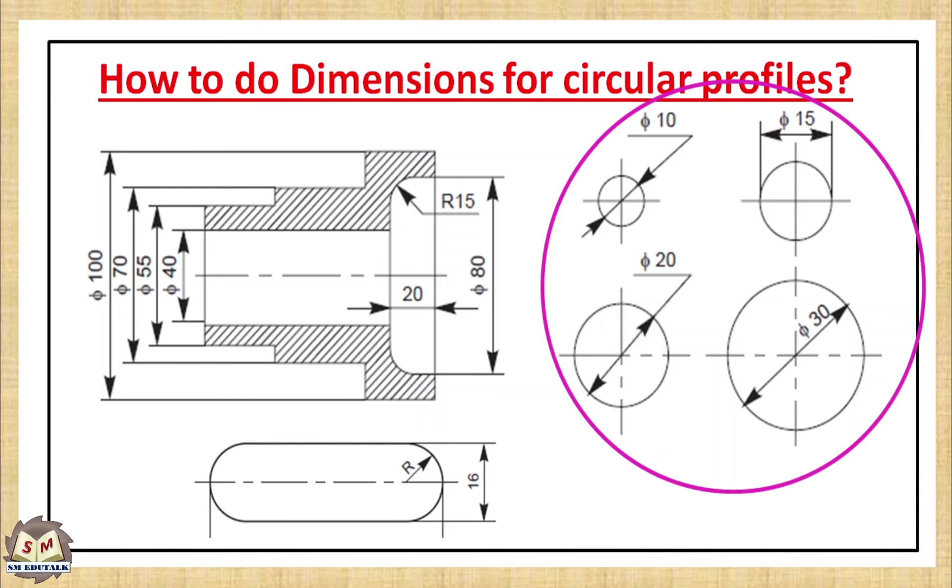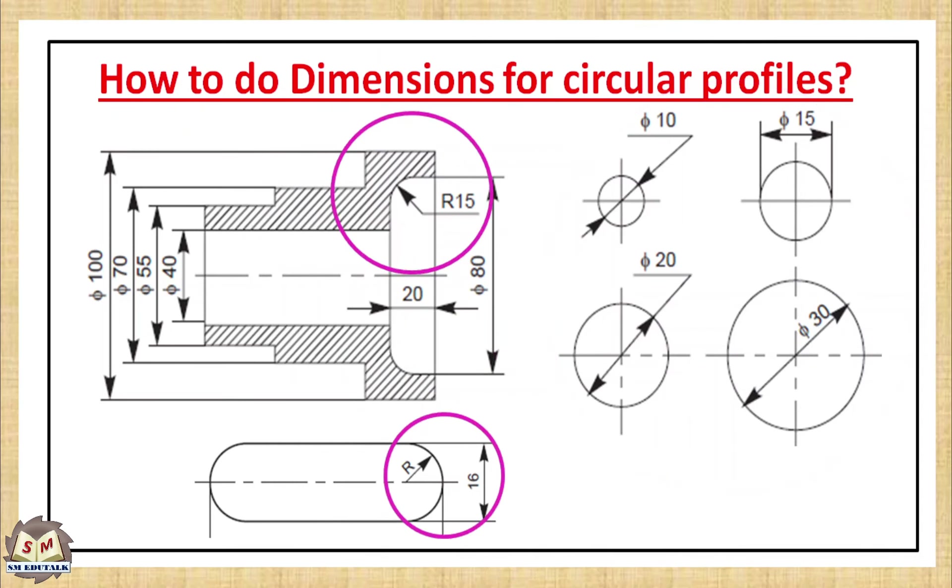Similarly, circular profiles radii should be dimensioned with a dimensional value preceded by a letter capital R. Here you can see the various ways to dimension an arc using its radius. In radius dimensions, only one arrow head is used in the dimension line.